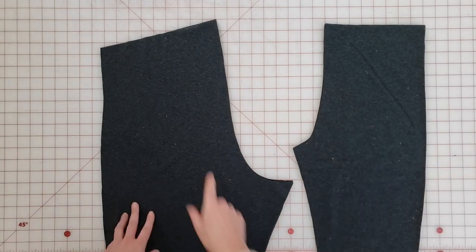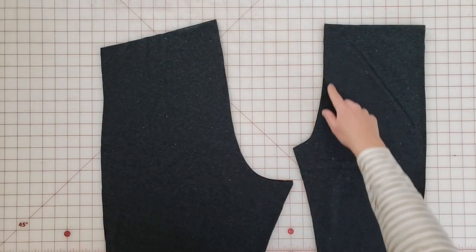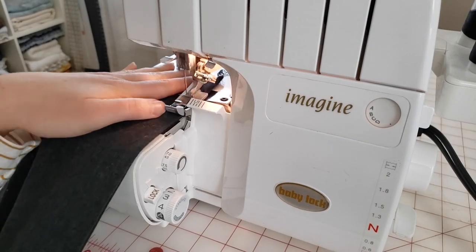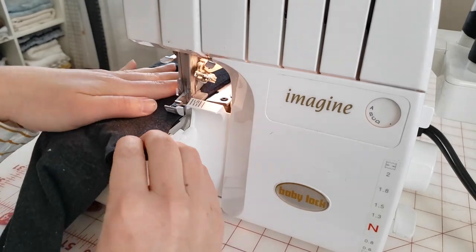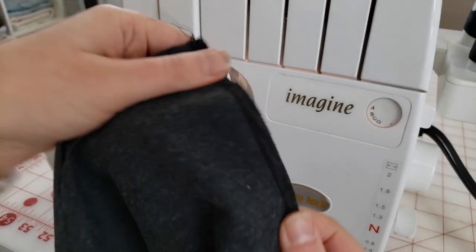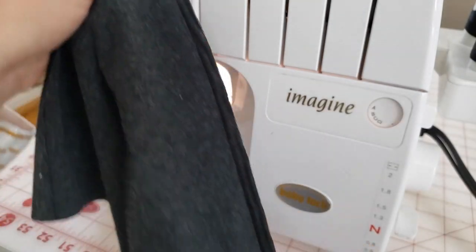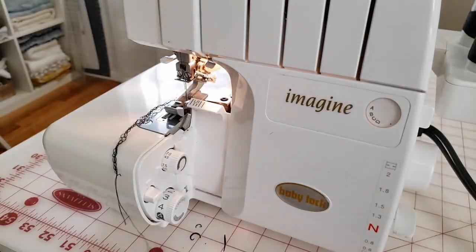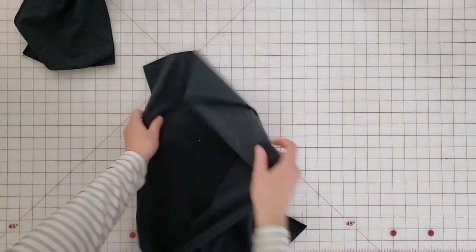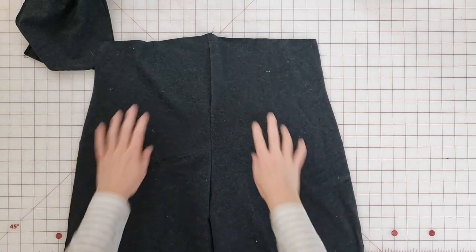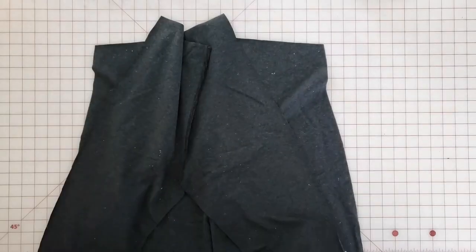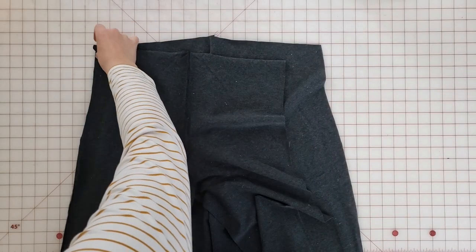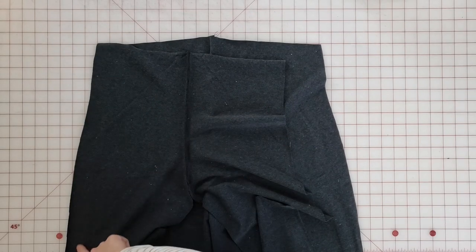To start, I'm going to sew the crotch curve on both the back and the front, sewing the two front pieces together and the two back pieces together at the crotch. I'm using my serger for this with a quarter inch seam allowance. Next, I'll open up the back legs and lay that face up, then take the front legs, open those up and lay those face down so that right sides are together, and sew both side seams.